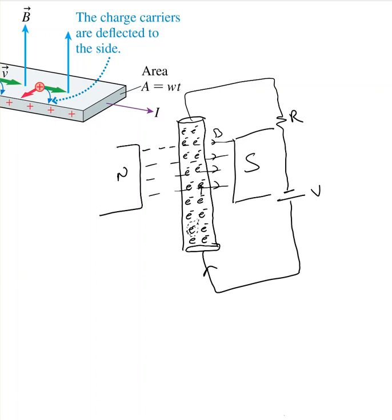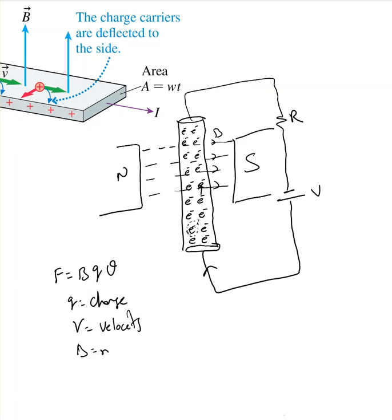Now you have a charge moving in one direction with a velocity in a magnetic field. It will experience a force. That force is F = BQV, where Q is charge, V is velocity, and B is magnetic field.